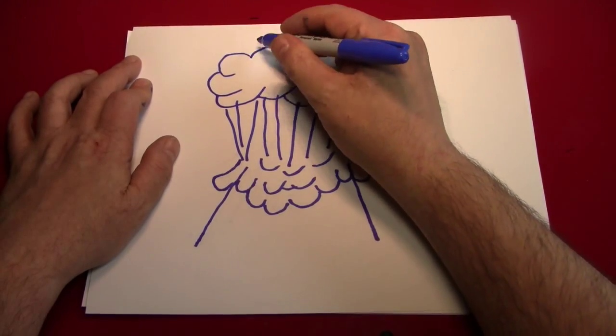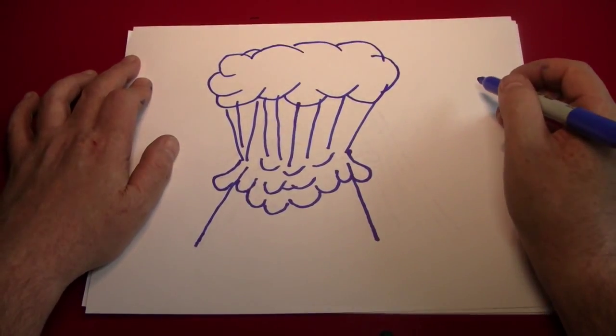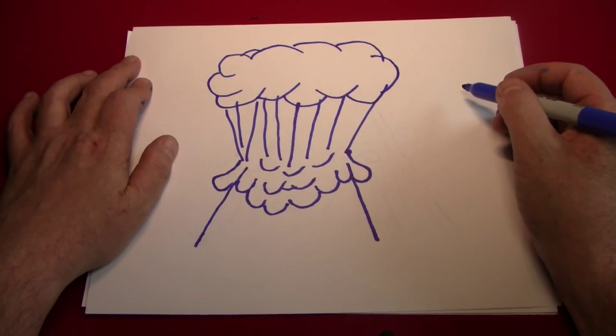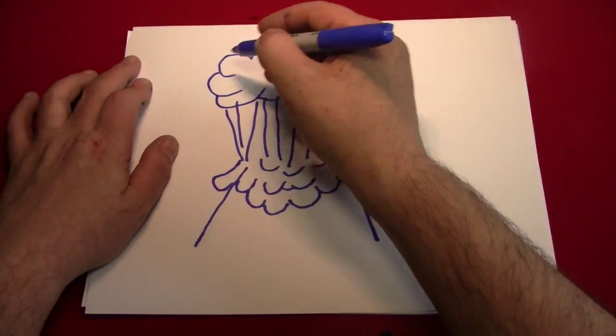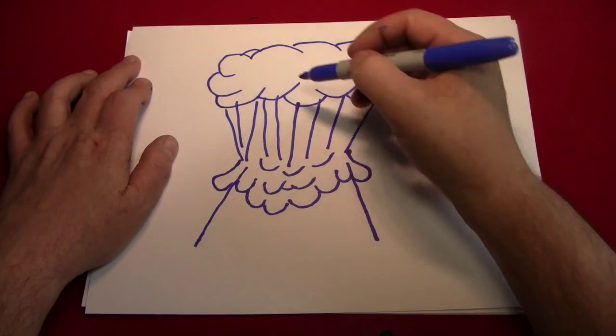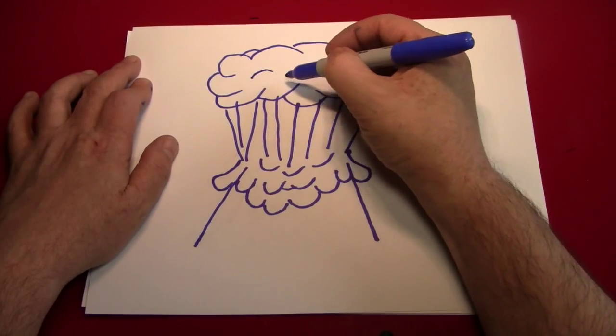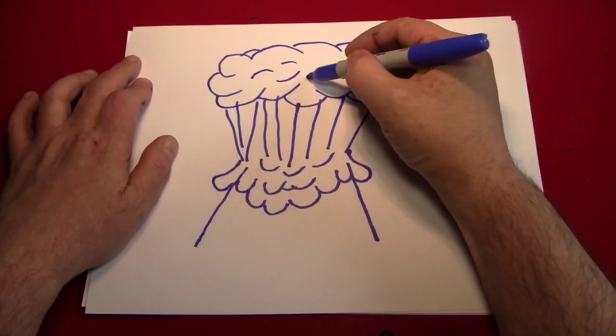This is similar to the cloud we drew in the first episode of Doodling with Reverend Jay. We simply make a bunch of curves. And put some curves on the inside, like that.